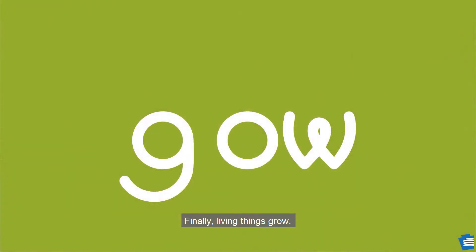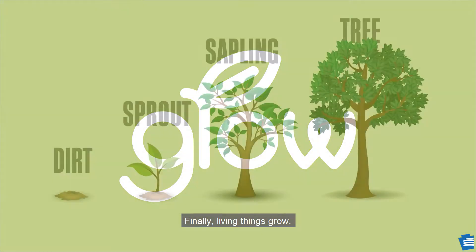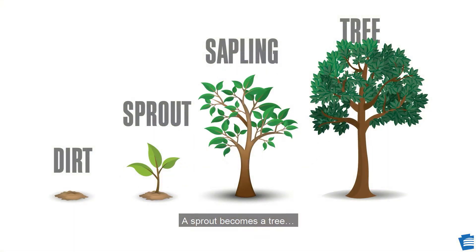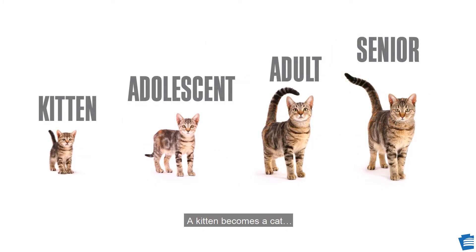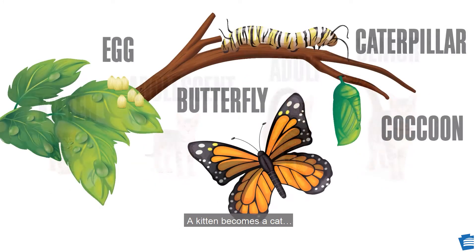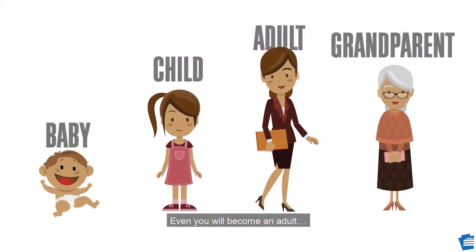Finally, living things grow. A sprout becomes a tree. A kitten becomes a cat. Caterpillars become butterflies. Even you will become an adult.